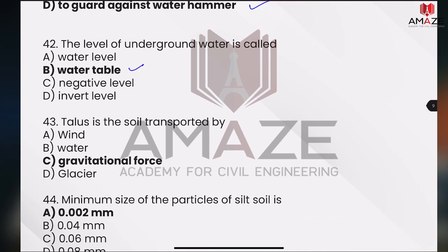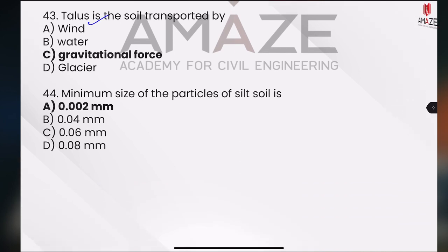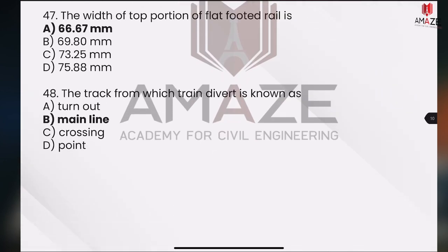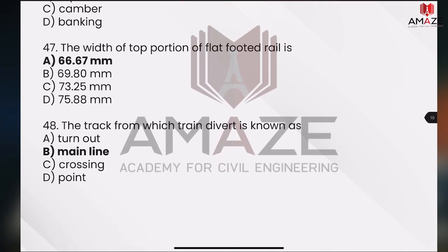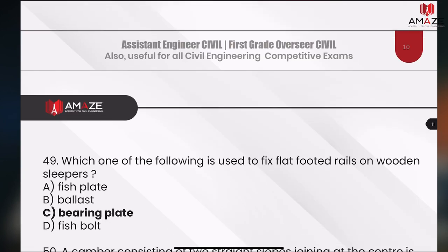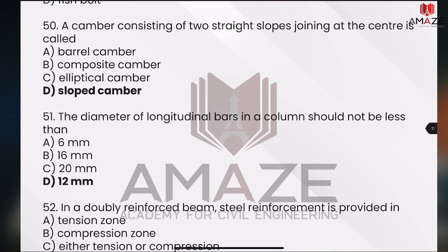Level of underground water — water table, tallis. This is a repeat question. Minimum size of silt, carriageway — this is an easy question. 66.67 — width of 12 portion of flat-footed rails. Now, turnout. Cousins are on bearing plate. Railway is on basic. Camber, transportation — now RCC.